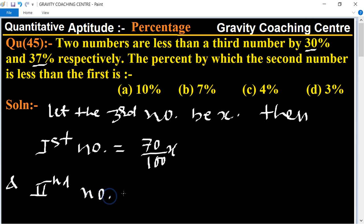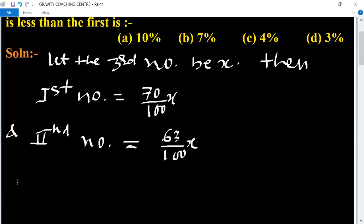And second number equals 37 less means 63 percent, 63 upon 100 of the third number. Therefore the required percent equals...